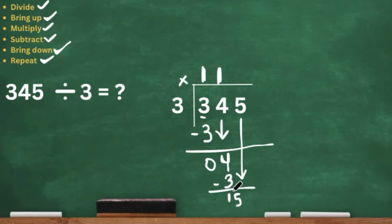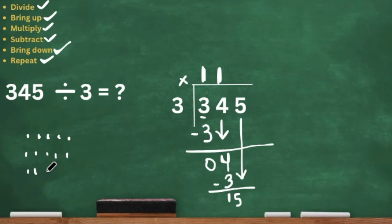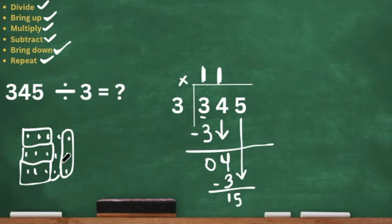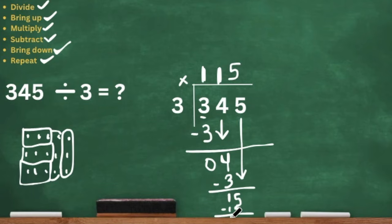I'm going to draw 15 dots and count off every 3 to group them. We count 1, 2, 3 — that's one group; another group; another group; another group; and one more group — giving us 5 groups total. So 15 divided by 3 is 5. I bring my 5 up, multiply: 5 times 3 is 15. I put 15 down here and subtract — 15 minus 15 is 0. So I have nothing left over, no remainder.